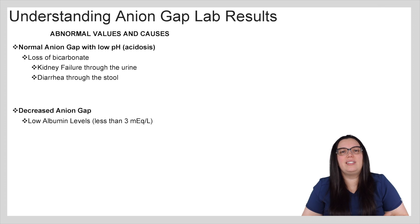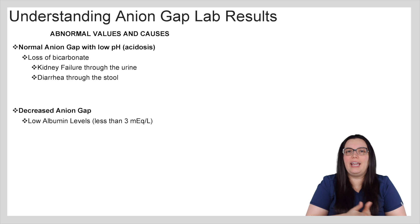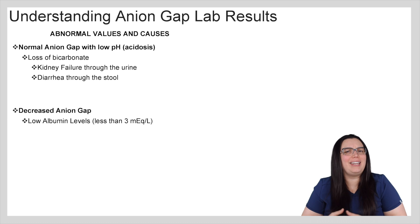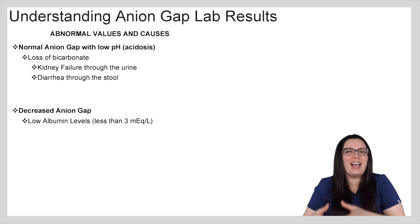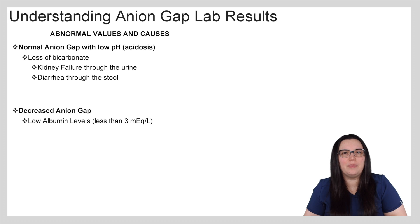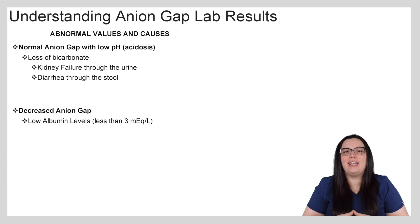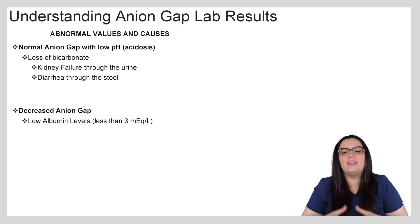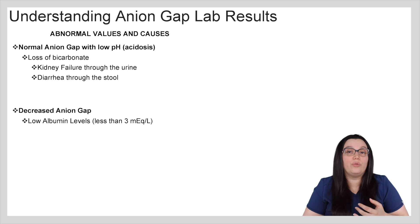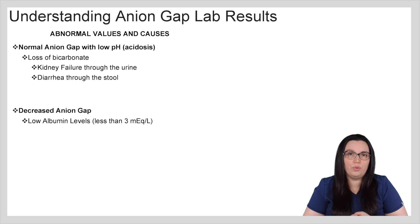There are times where you can have a normal anion gap but a low pH, meaning that some kind of acidosis is taking place but it hasn't affected the anion gap. The reason that occurs is because of that loss of bicarbonate. When you have kidney failure, you lose it through the urine, and when you have diarrhea, you're losing it through the stool.